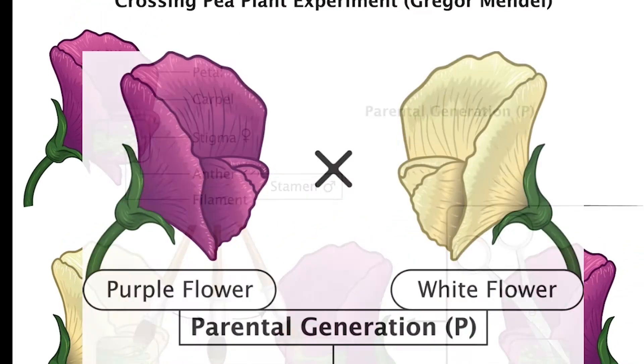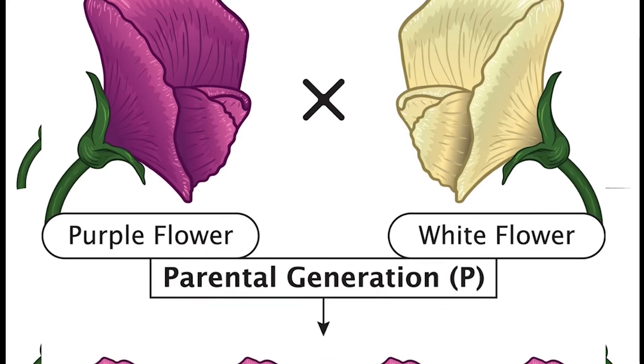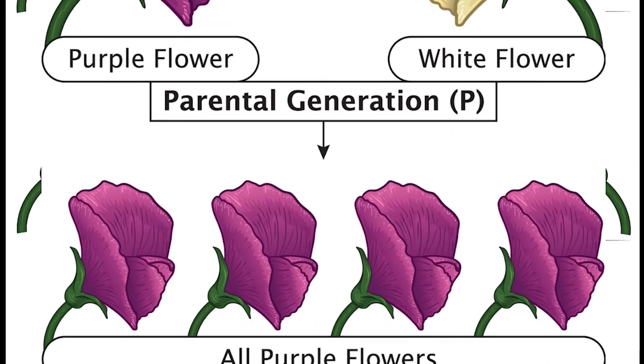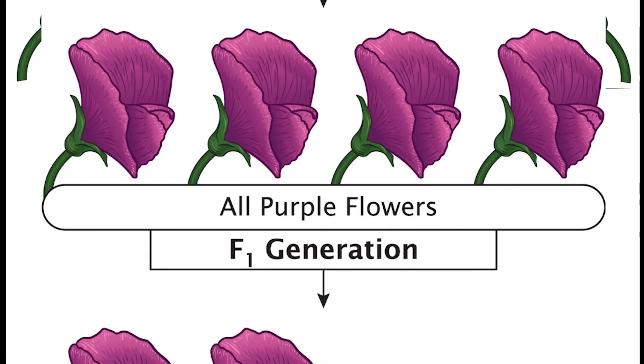In one of Mendel's most famous and important experiments, he crossed a line of plants that only produced purple flowers with a line of plants that only produced white flowers. When he collected and planted the peas, he found that all of the plants had purple flowers. Though the parental generation had white and purple flowers, the next generation, denoted the F1 generation, consisted of only purple flowers.